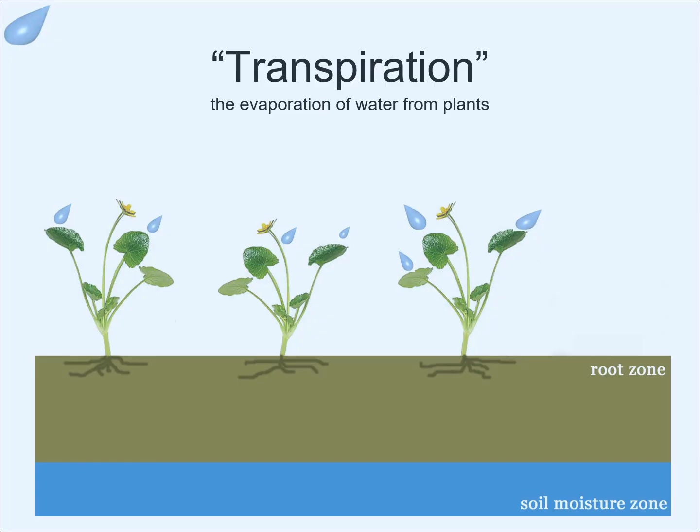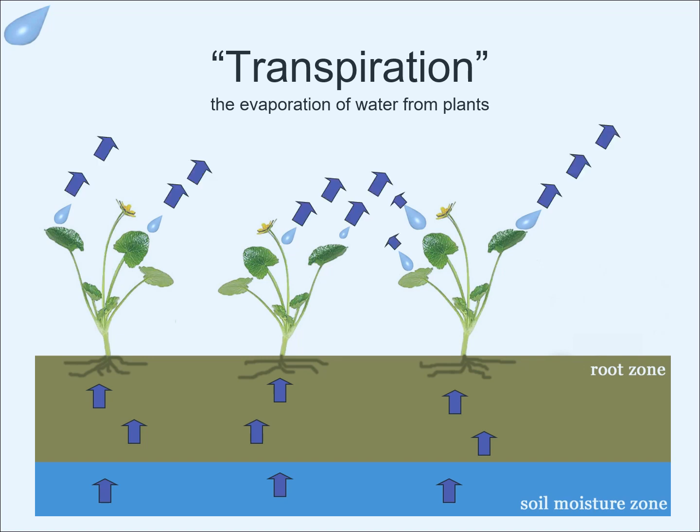What is transpiration? Transpiration is the evaporation of water from plants. Plants need water to survive and they obtain it from the soil. But plants also sweat water out through their leaves during dry spells or sunny days. This is called transpiration.